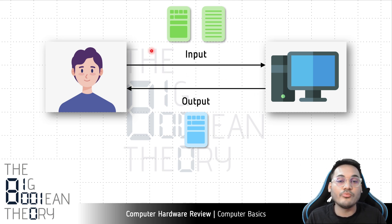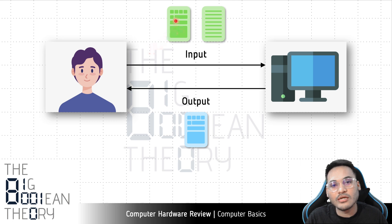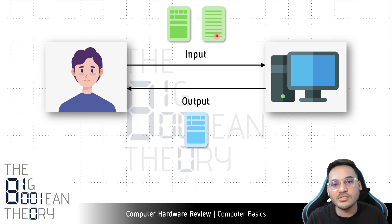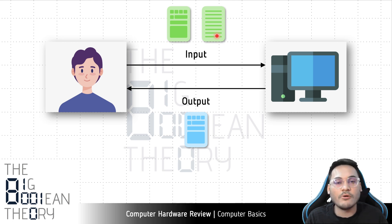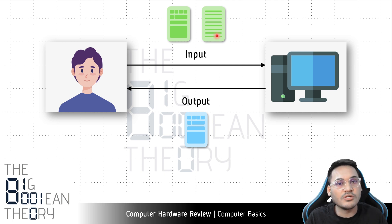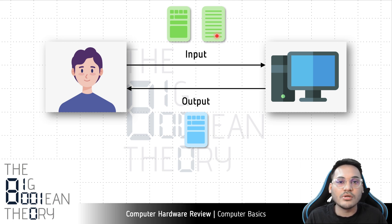There are two types of input the user gives. First, there is data — data can be any kind of information: text, image, audio, video — a wide variety of formats. And apart from the data, the user also gives a sequence of instructions, which tells the computer how it can process the input data. This sequence of instructions is in the form of a computer program.